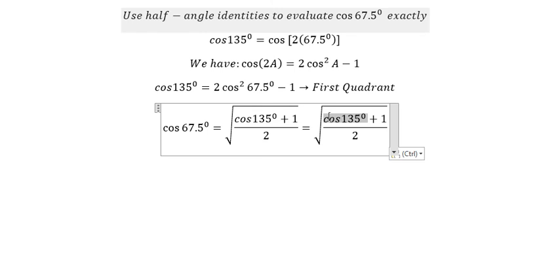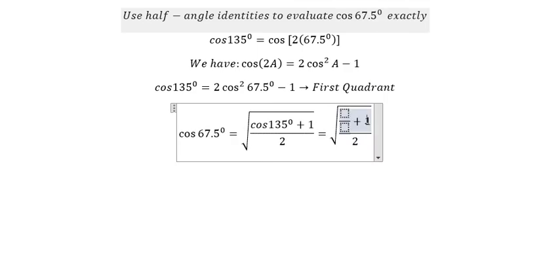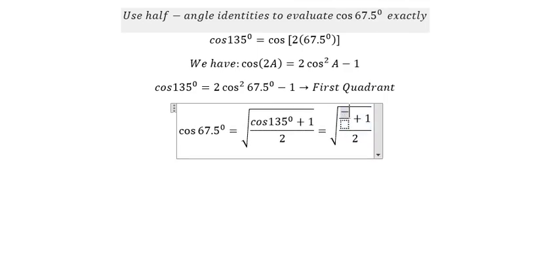We know that cos(135°) equals negative square root of 2 over 2.